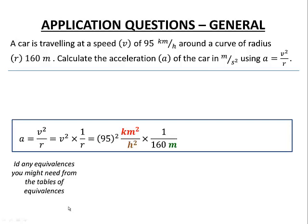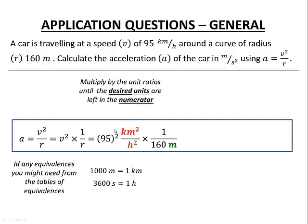We look at equivalences from the table or metric prefixes. There are 1000 meters in one kilometer from our metric prefixes. From our tables, there are 3600 seconds in one hour. I want to get rid of kilometers squared, so I apply that equivalence squared: 1000² meters² equals one kilometer². My kilometers are now gone. The meters squared in the numerator and the meters in the denominator partially cancel, leaving one meter in the numerator — exactly what I want.